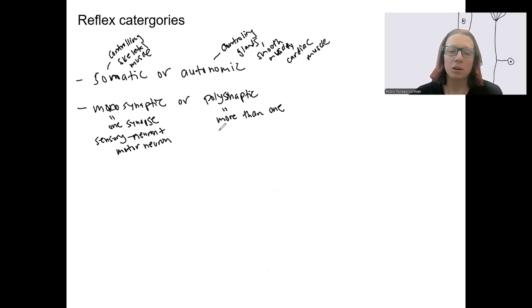Polysynaptic are going to also involve interneurons within the nervous system, the central nervous system, where the processing occurs. The central nervous system, where is that?